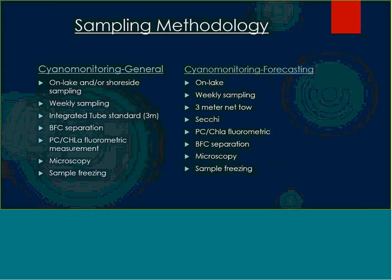The sampling methodology, simply stated, involves on-lake and shore-side sampling for general cyanobacteria monitoring. For a new development from this past summer looking at potentially forecasting blooms, this is on-lake data collection with a temporal component. In order to track the progression of cyanobacteria in the lake, we need weekly sampling to take place — that is one of the protocols for the monitoring. General monitoring uses an integrated tube three meters in length to capture the photic zone.